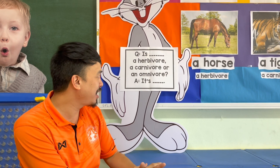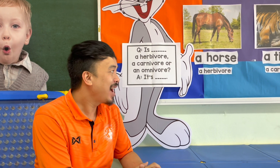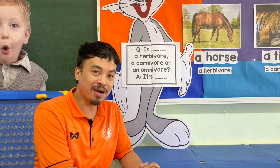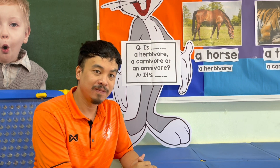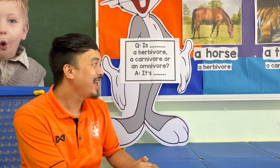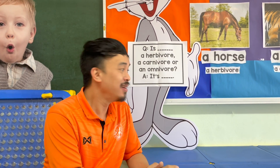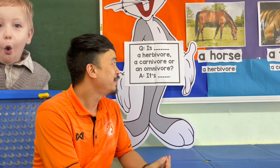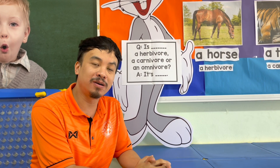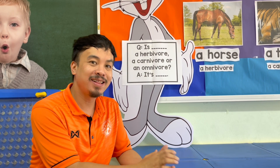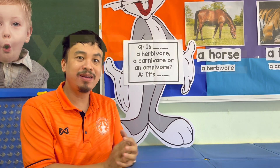Let's move on to the second example. Is a tiger a herbivore, a carnivore, or an omnivore? Good job — the answer is: it's a carnivore. Let's proceed to question number three. Is a dog a herbivore, a carnivore, or an omnivore? Excellent — the answer is: it's an omnivore. Very good. Thank you.